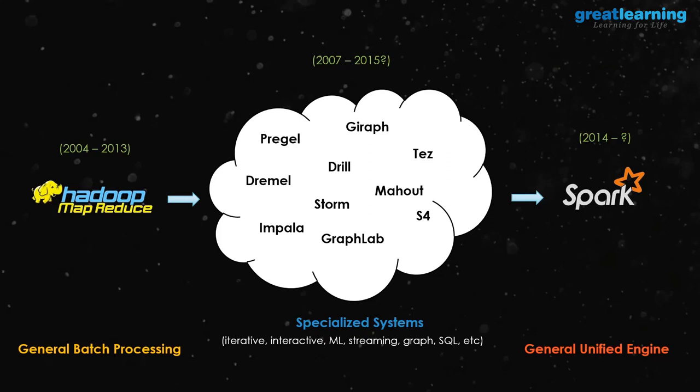That is where you got Hive, then Impala, then Presto, Drill, and many other tools — around 10-plus different SQL tools that can explore data in Hadoop. And some people wanted machine learning to be done on top of Hadoop, so in the earlier versions before Spark, people used something called Apache Mahout.